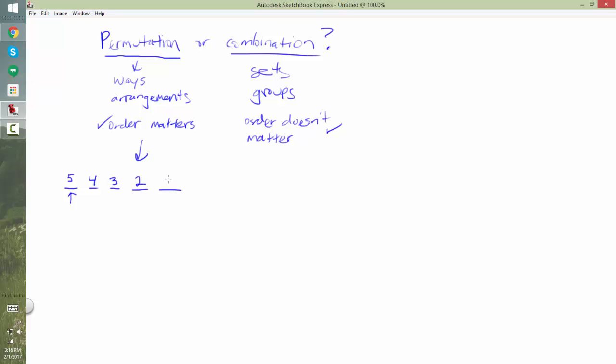And when there's two chairs left, there's two. And the final chair, there's one possible person. To get how many ways we can arrange five people in five chairs, we just multiply them all and we get 120. So again, this is ways and arrangements, order mattered, so we just kind of had to multiply.